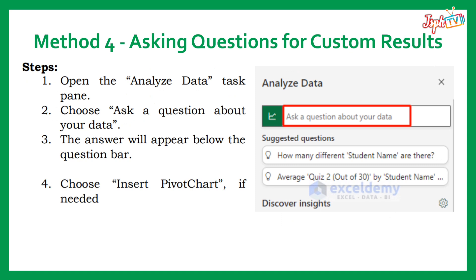Method 4: Asking Questions for Custom Results. Open the Analyze Data task pane and choose Ask a Question about your data. The answer will appear below the question box. Choose Insert Pivot Chart if needed.